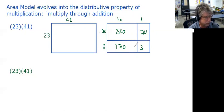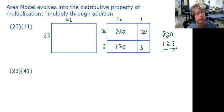So while I do this math, 800 plus 20 is 820. 120 plus 3 is 123. And then if we add that together we get 943.